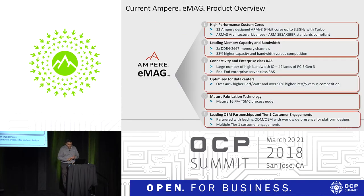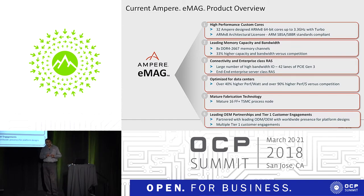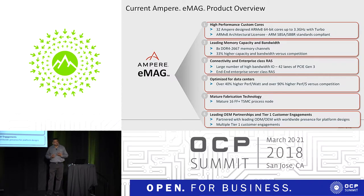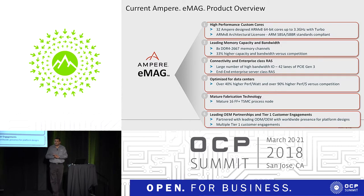The current EMAC product, which we're launching today, has 32 high-performance cores in a 64-bit native ARM architecture, up to 3.3 GHz with turbo. We are an ARM architecture licensee, meaning all cores — the CPU, caches, and interconnect — are built by Ampere. We have eight memory channels, up to DDR4-2667, providing about one terabyte of capacity or 16 DIMMs per socket — about 33% higher capacity and bandwidth compared to competition.